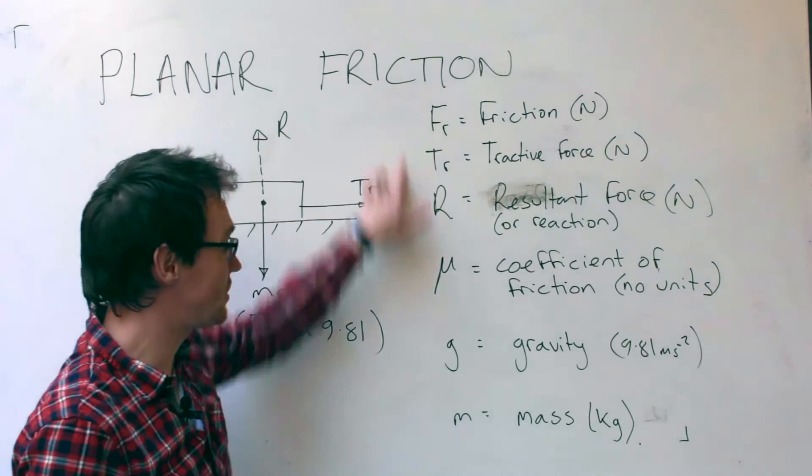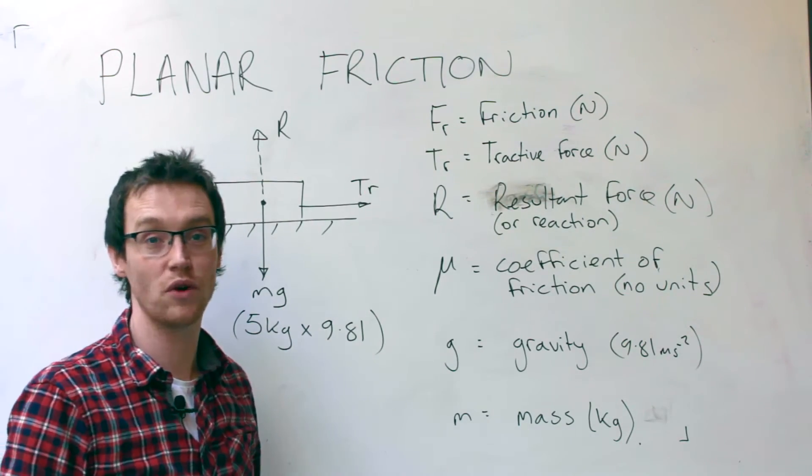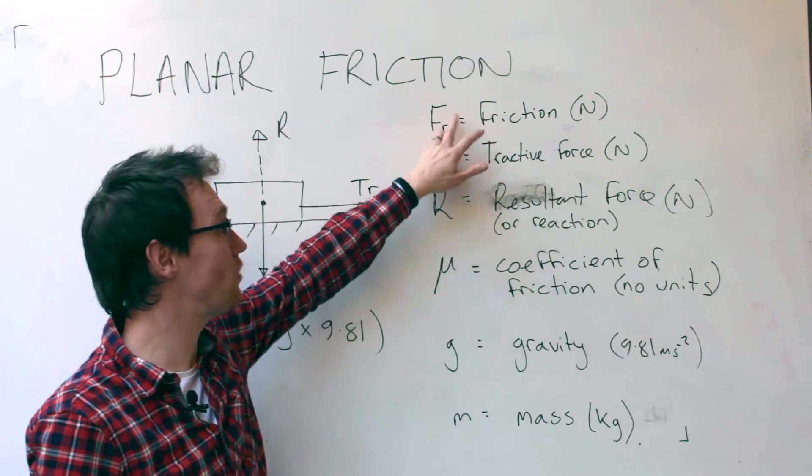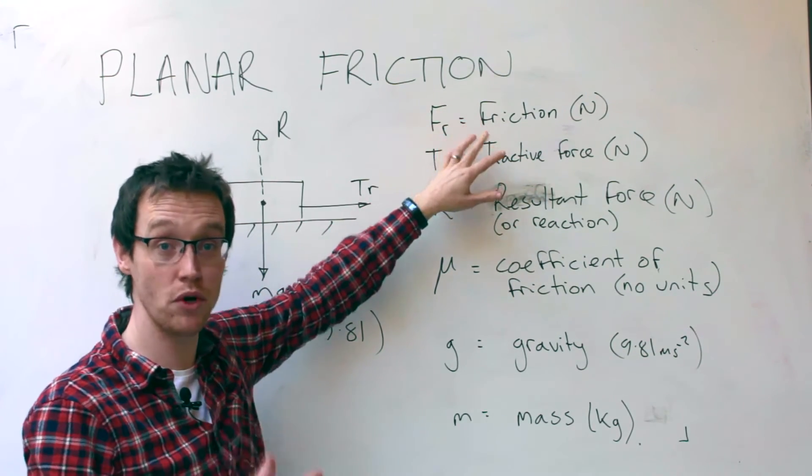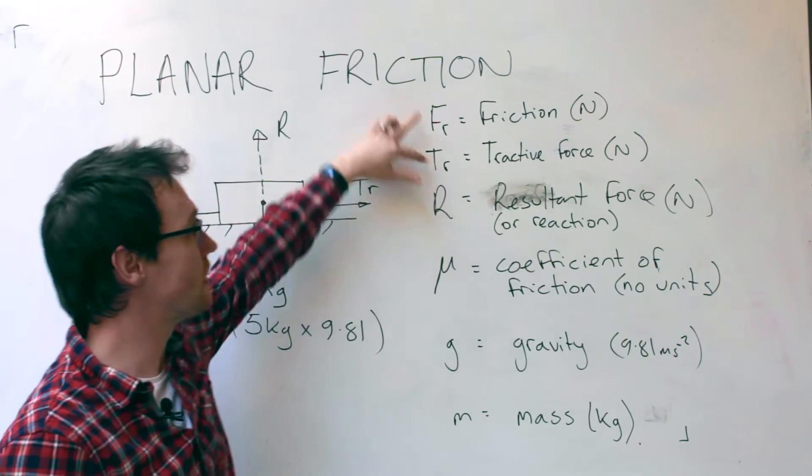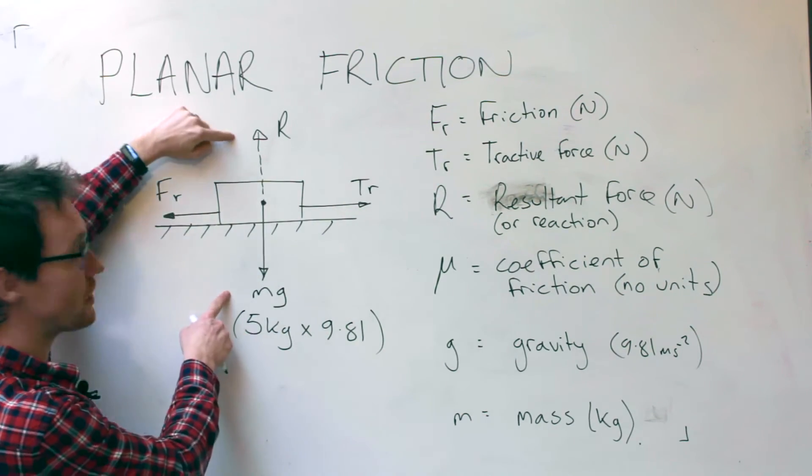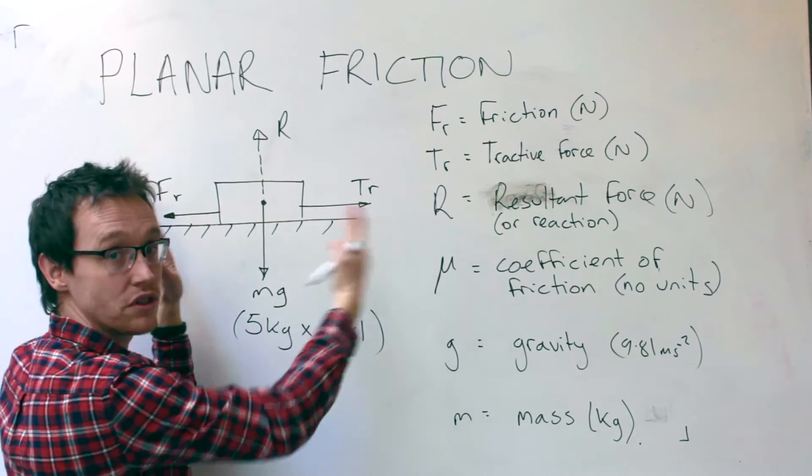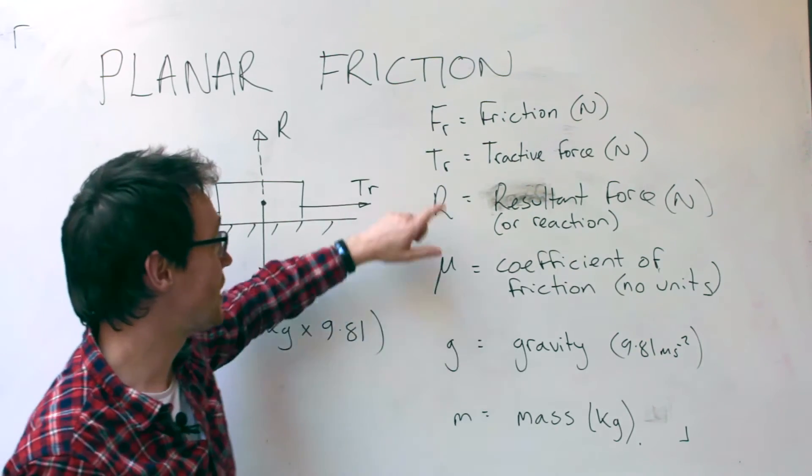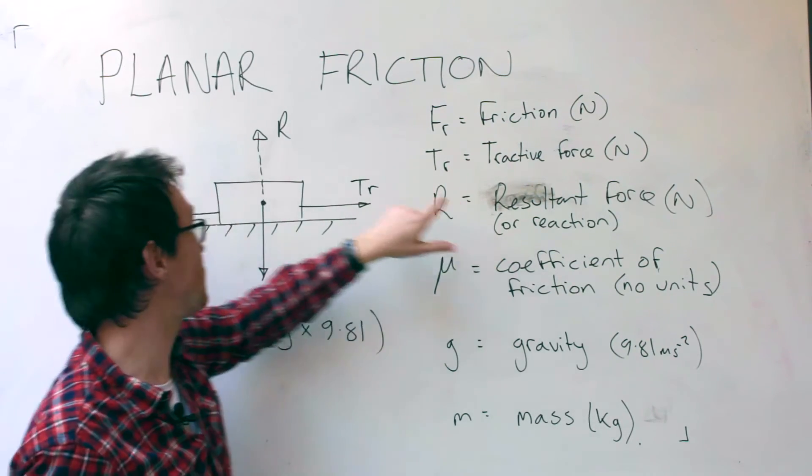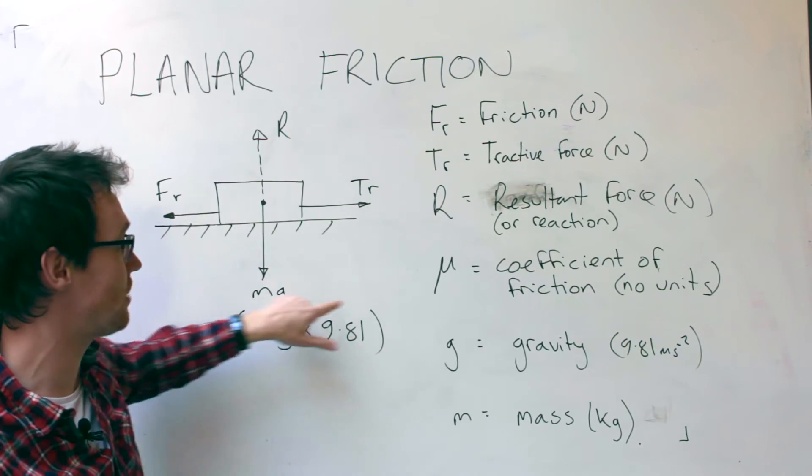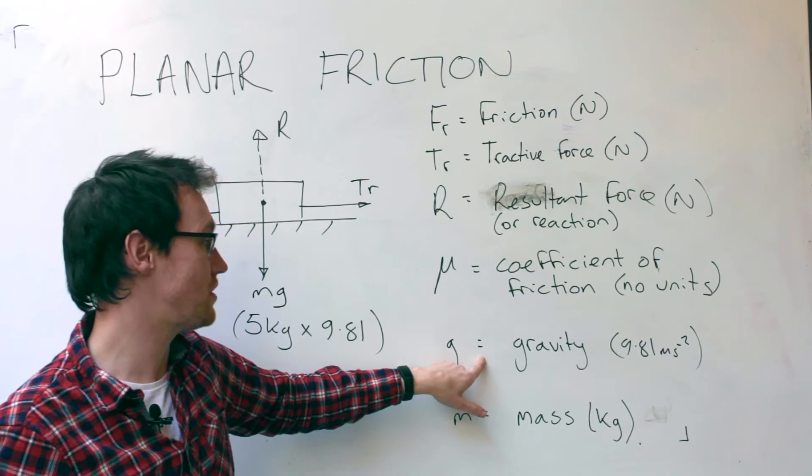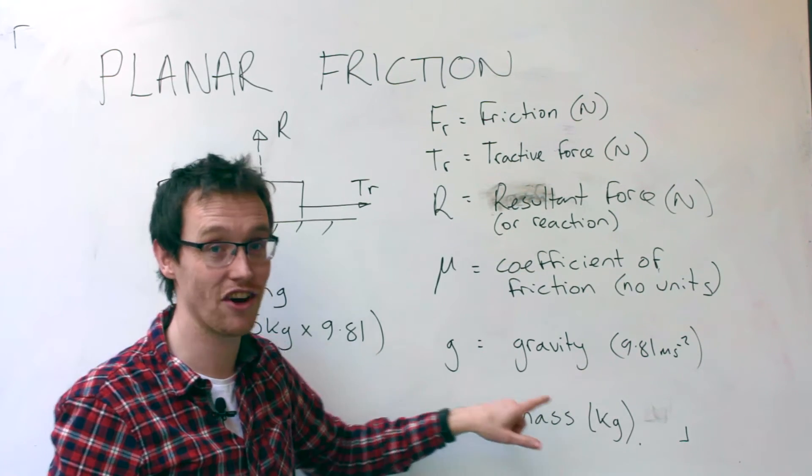Here we have all of the different variables that are important in our equations. We've got friction measured in newtons, tractive force measured in newtons. They will balance out if this thing isn't in motion, if it's not moving laterally, then these two must be equal, in the same way as the mg and the R are equal so it's not moving up or down. If the thing's sat still, the friction and the tractive force are balanced, in equilibrium. We've got the resultant force, which is just M times G, M being the mass in kilos and G being the gravity which is 9.81 metres per second squared on Earth.